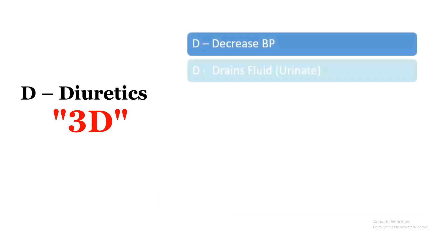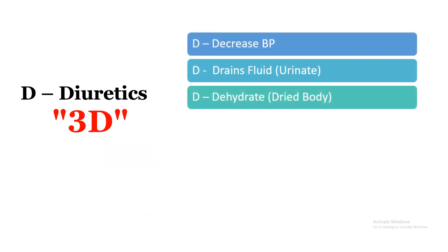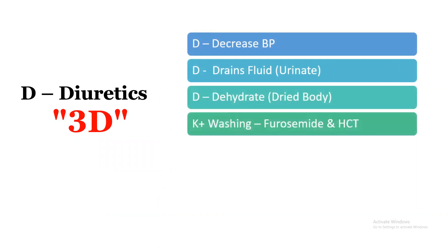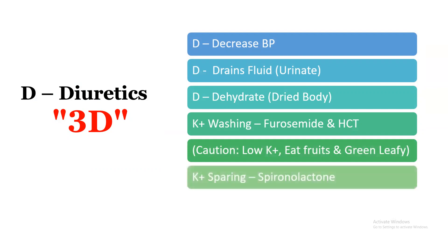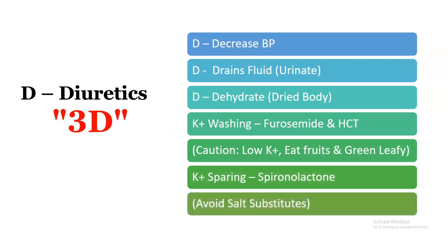Diuretics can be memorized by three D's: decrease BP, drain fluid and help urinate, and dehydrate the body. Potassium-wasting diuretics include furosemide and hydrochlorothiazide — caution is needed for low potassium, so eat more fruits and green vegetables. If taking potassium-sparing diuretic spironolactone, avoid salt substitutes.